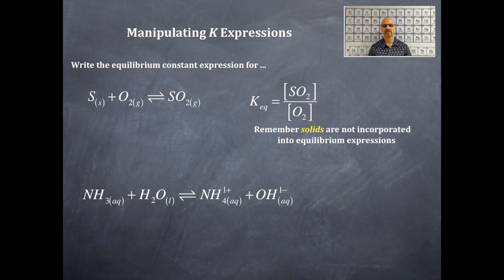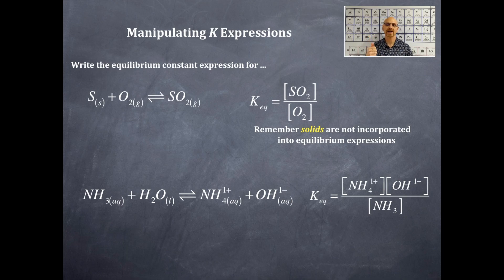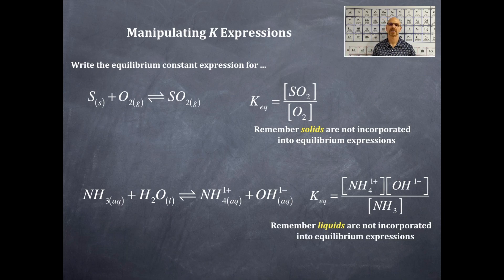Let's try another equation. This is ammonia (NH3, aqueous) plus water (H2O, liquid), which produces ammonium ion (NH4⁺, aqueous) plus hydroxide ion (OH⁻, aqueous). Write the K-EQ expression: in the numerator you have [NH4⁺] times [OH⁻], both to the first power, divided by [NH3] to the first power. Liquid water is not included because solids and liquids are not included in K expressions.